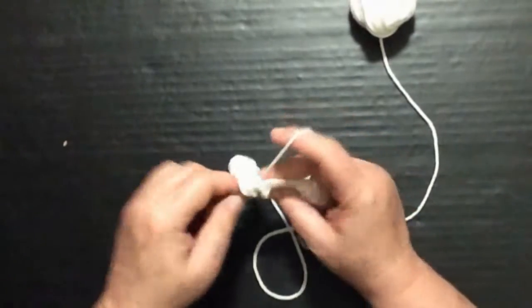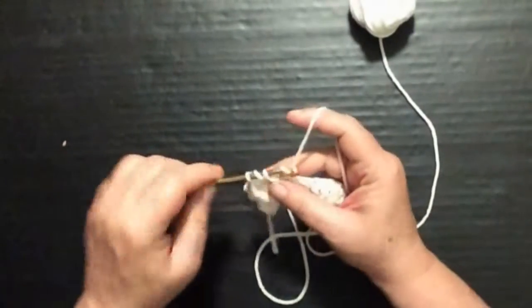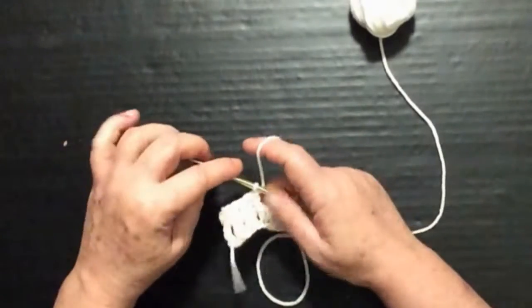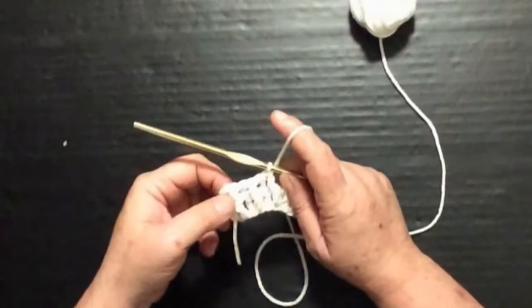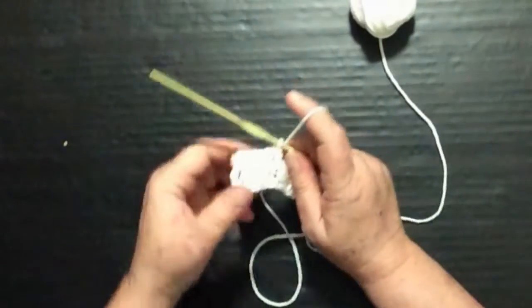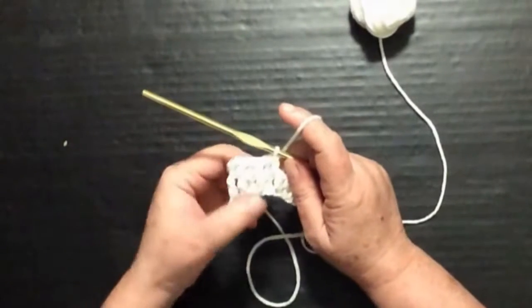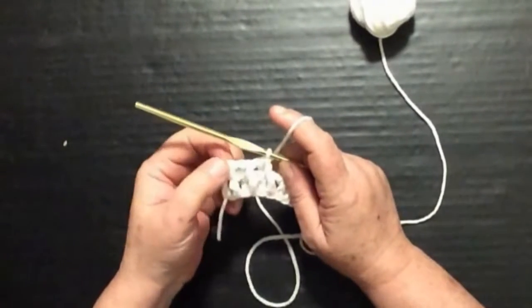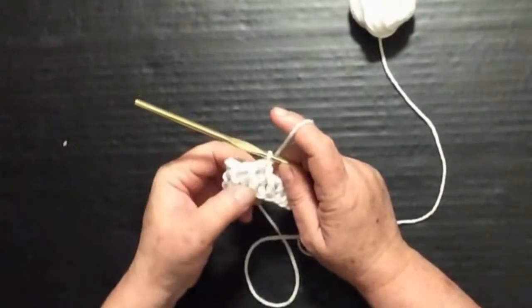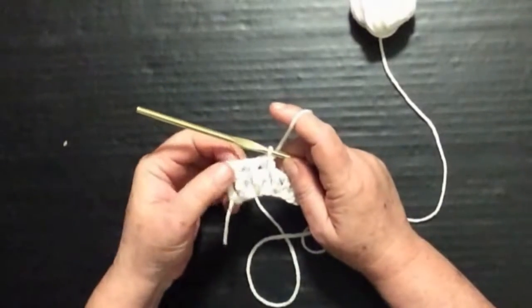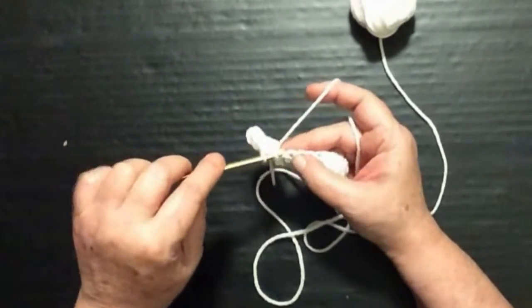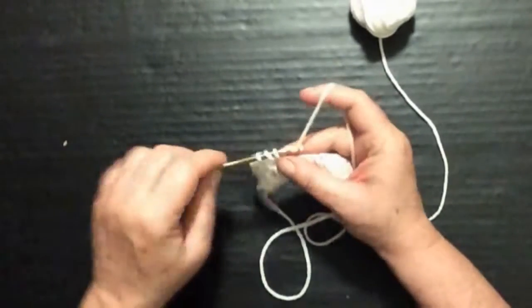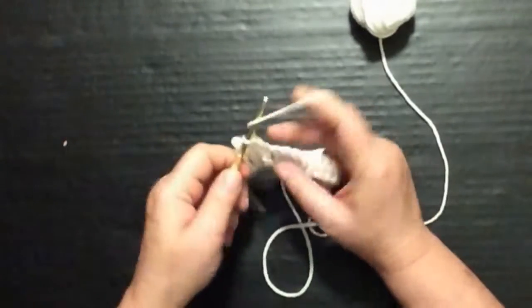What this does is it makes it kind of stretchy, and this is good for cuffs, waistbands, children's clothes, and adult sweaters - these things are very handy. We go into the next couple stitches right into the stitch top here.